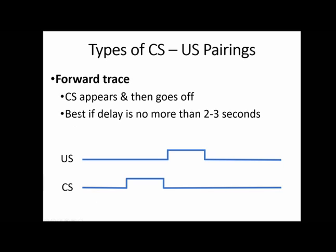Next is the forward trace pairing. In this situation, the conditioned stimulus happens first, but there is a very slight gap — a trace of a gap — between the conditioned stimulus stopping and the unconditioned stimulus starting. The conditioned stimulus (bell ringing) starts and then stops. There's a little gap, and then the unconditioned stimulus starts. So you ring the bell, stop ringing the bell, wait a moment, and then give them the food. This works best for learning if that delay is very short.